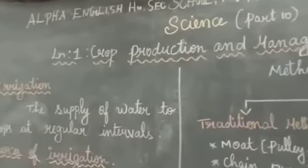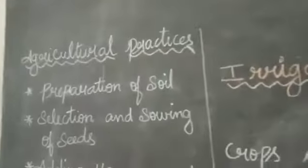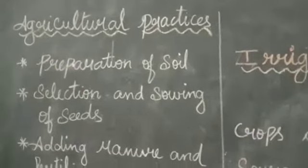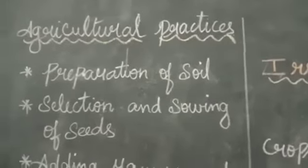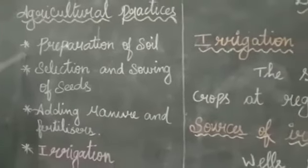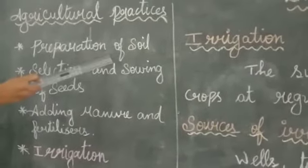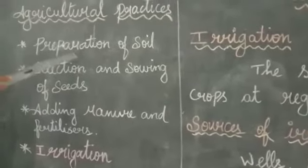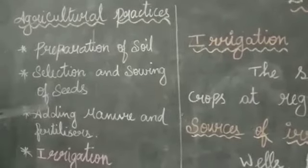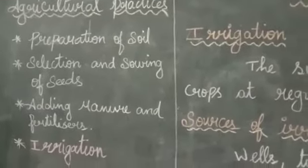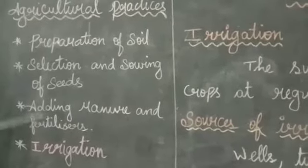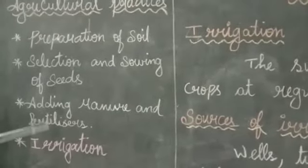In our previous class, we learnt about different steps of agricultural practice. The first step is preparation of soil. After preparing the soil, we need to select and sow seeds. The next step, after selecting and sowing seeds, is to add manure and fertilizer to the soil.